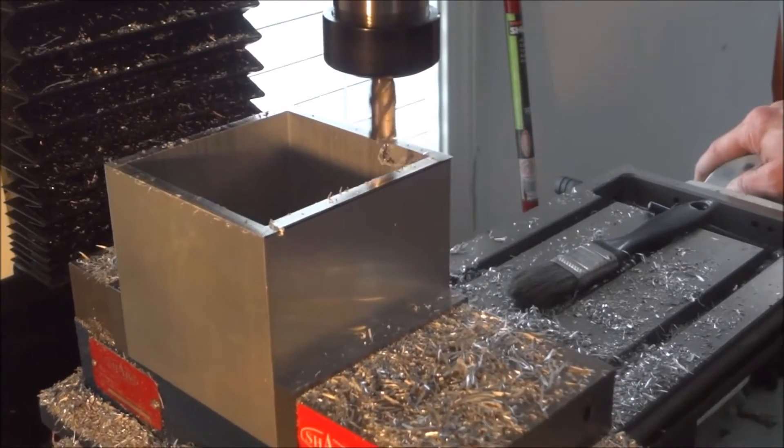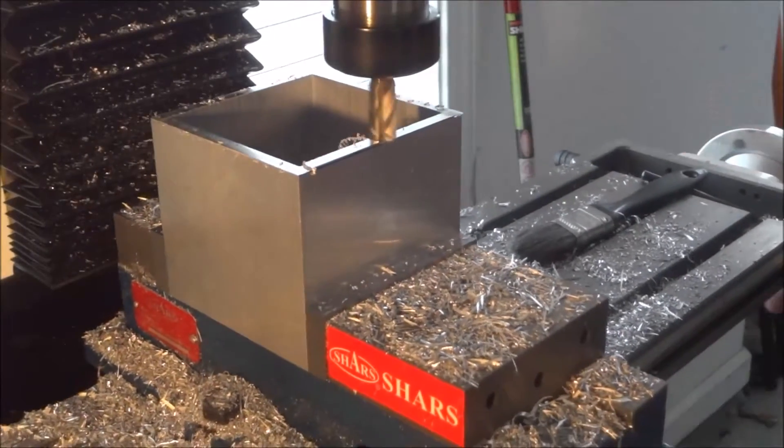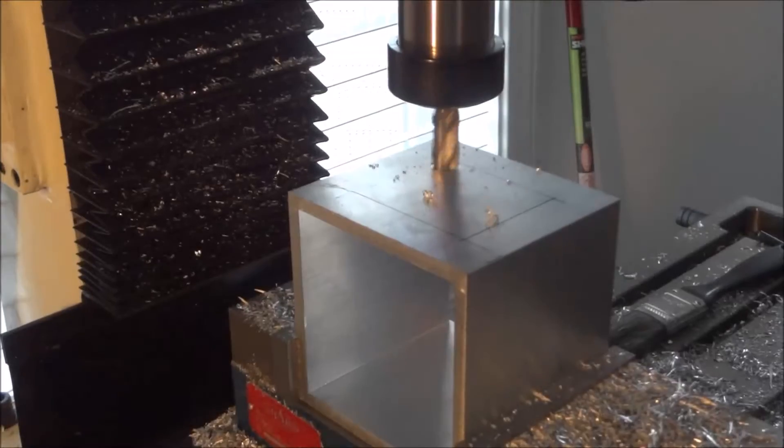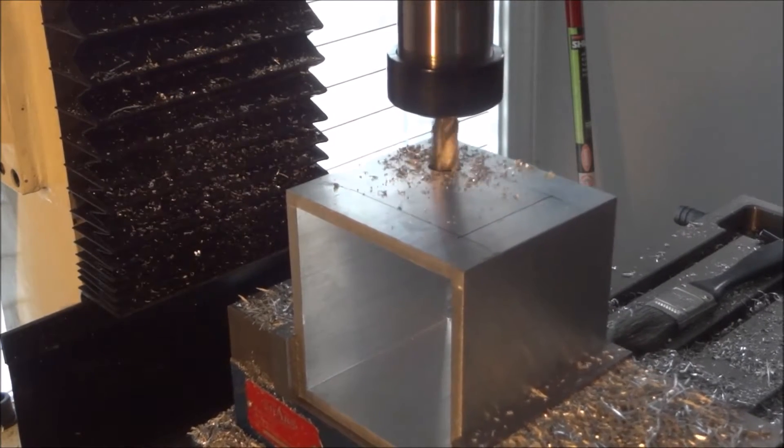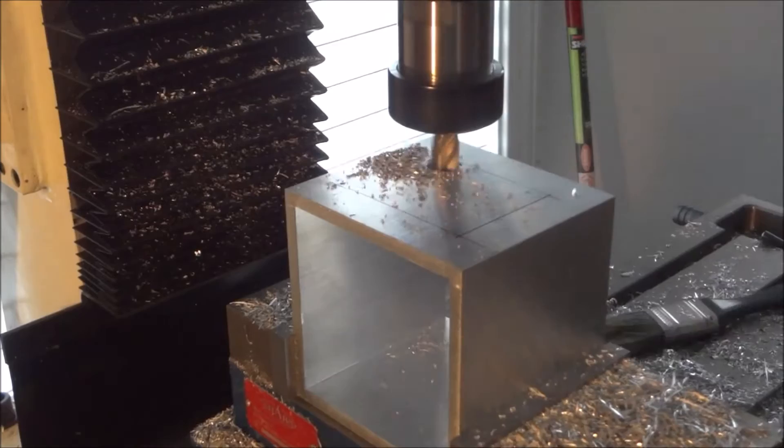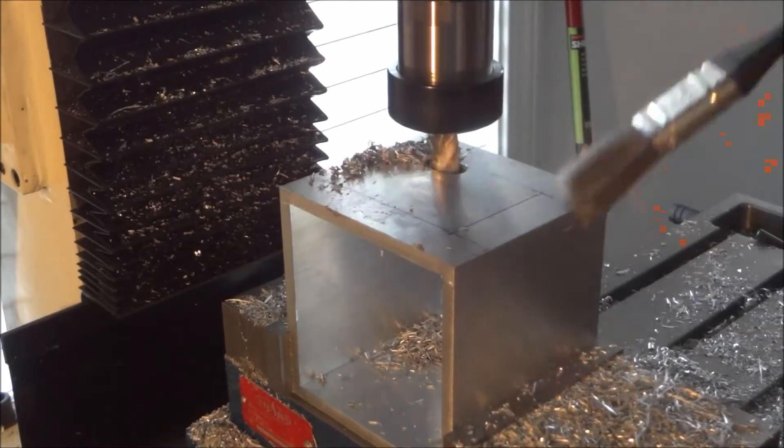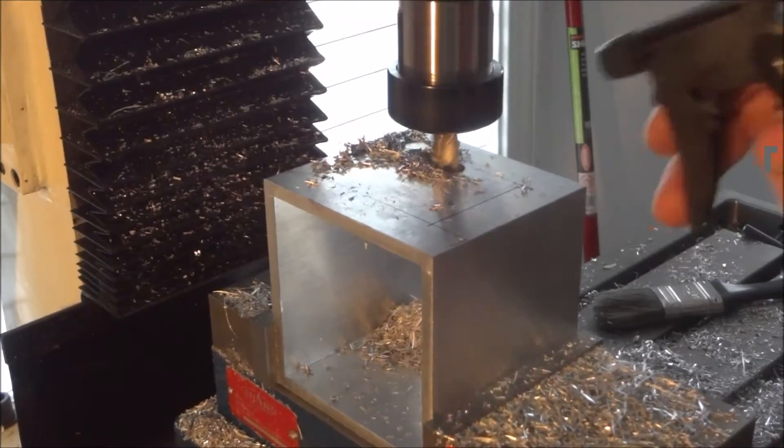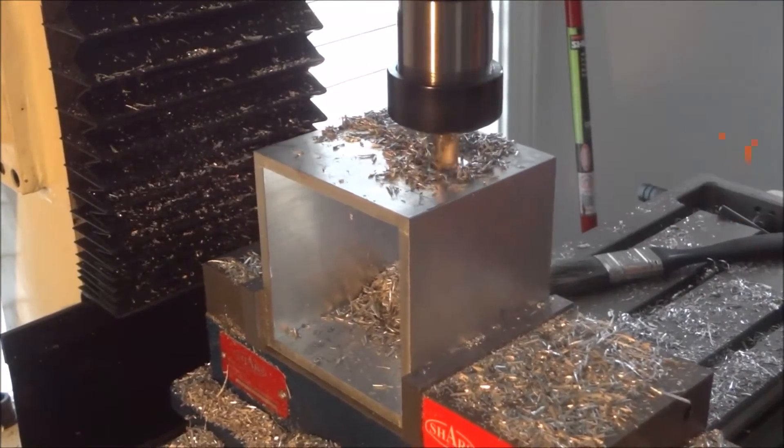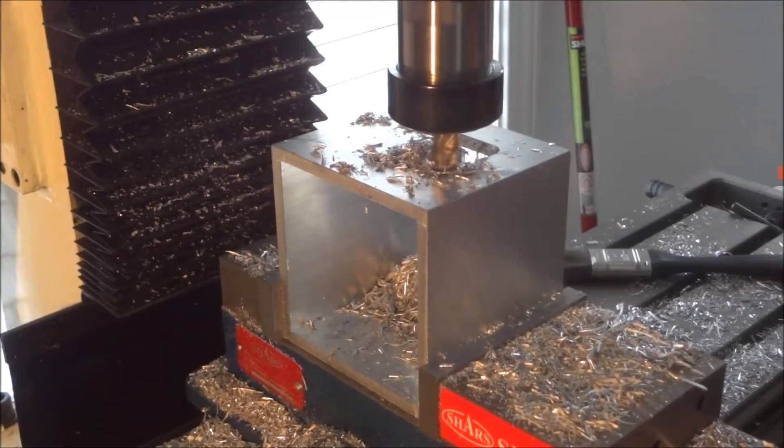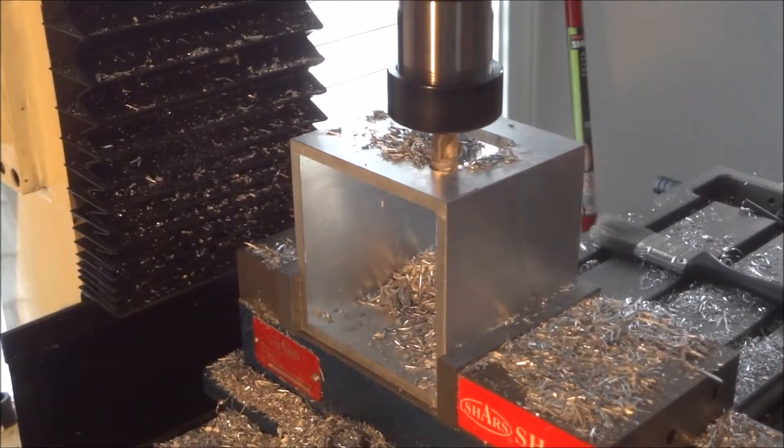Then I'm milling it to the proper length which again is 90 millimeters, and then I set up for the access hole in order to get in there and tighten up the coupling. Now what I did here was I just moved the y-axis back and forth as I was lowering the z-axis to kind of plunge through there.